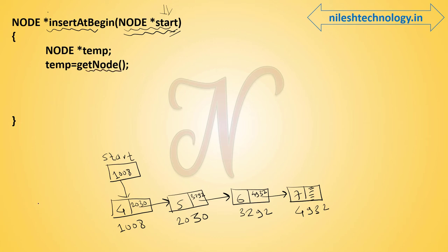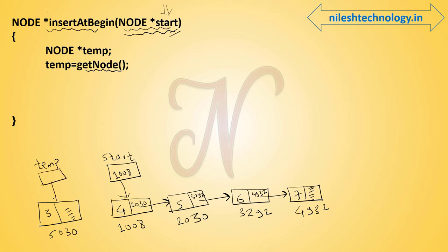By using getNode function we create a single node. This node accepts one data value from the keyboard — for example, the number 3. The new node has address 5030 and its next pointer is null. The temp pointer is pointing to this node at address 5030.